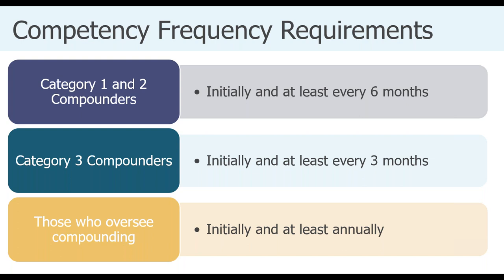A notable addition to the chapter is the distinction between those who physically perform compounding—technicians or pharmacists—and those who oversee compounding, such as the designated person or other pharmacists. Those overseeing the compounding process who never actually compound are required to complete these competencies initially and then at least annually. This makes the requirement more manageable for oversight roles. However, if at any point these individuals must compound, they fall into the frequency requirements based on the category they are compounding.